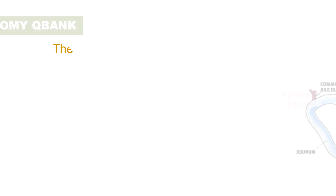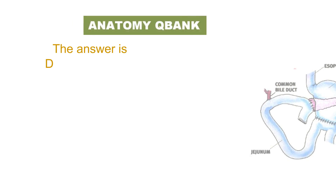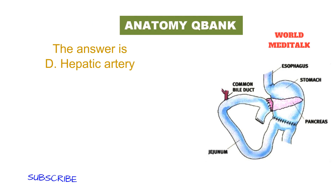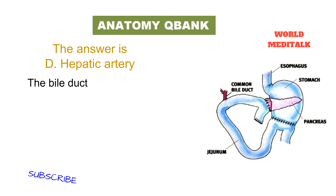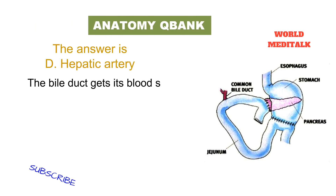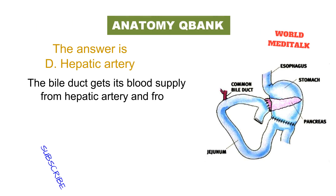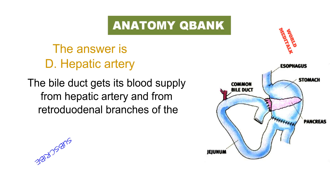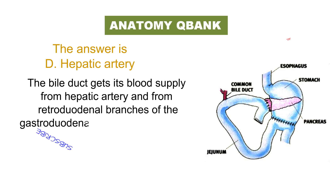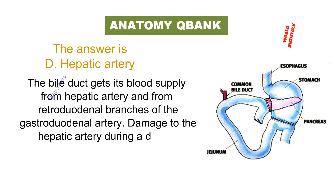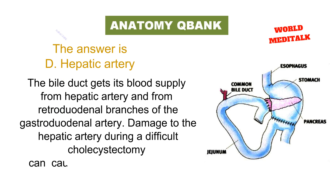The answer is hepatic artery. The bile duct gets its blood supply from the hepatic artery and from the retroduodenal branch of the gastroduodenal artery. Damage to the hepatic artery during a difficult cholecystectomy can cause bile duct strictures.